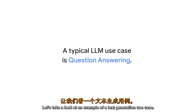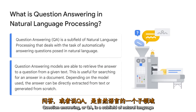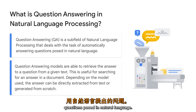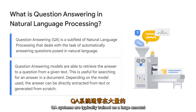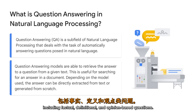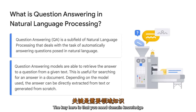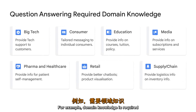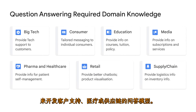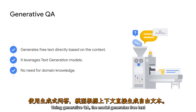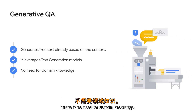Let's take a look at an example of a text generation use case. Question answering, or QA, is a subfield of natural language processing that deals with automatically answering questions posed in natural language. QA systems are typically trained on a large amount of text and code and are able to answer a wide range of questions including factual, definitional, and opinion-based questions. The key is that you need domain knowledge to develop these question-answering models. Using generative QA, the model generates free text directly based on the context — there is no need for domain knowledge.